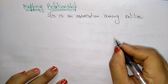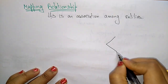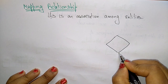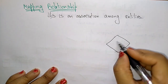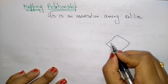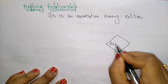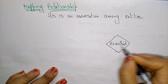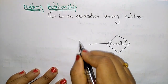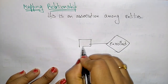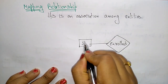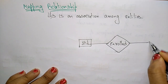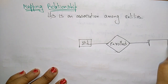Let me write the diagram first. It is a pictorial representation of the ER model. So, this is 'enrolled' — it is a relationship between the two entities. The entities are the student and course.